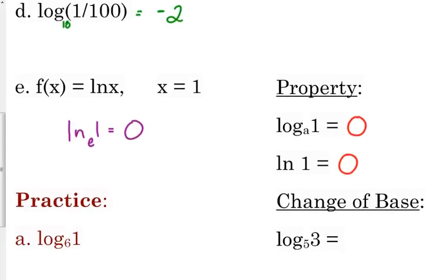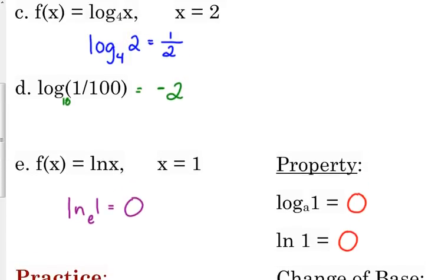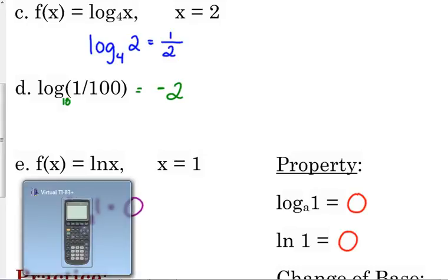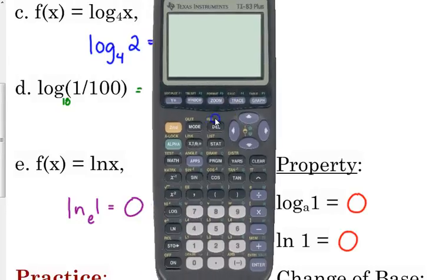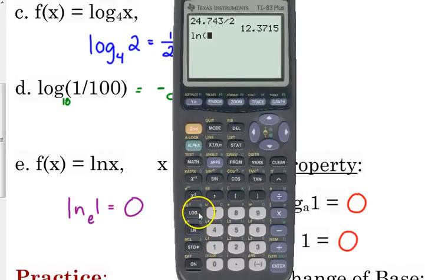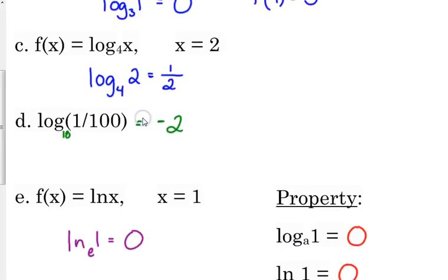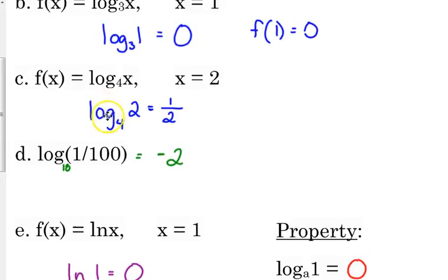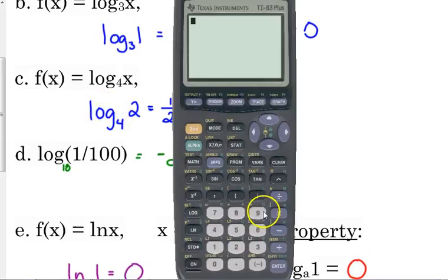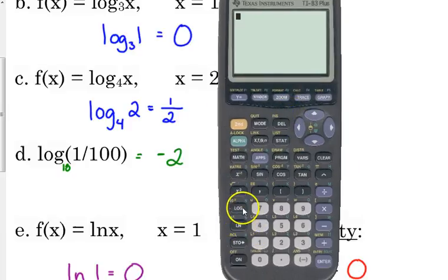Now, we also need to talk about something called change of base because on your calculator, most of your calculators only have the natural log and the common log. They don't give you a way to change the base. Now, some of you that may have one of the newer calculators of your own, it does let you change the base, but on this calculator, you can only do log base 10. So, if I wanted to check myself on, say, example C, log base 4 of 2, what we've got to do is we've got to use something called change of base.